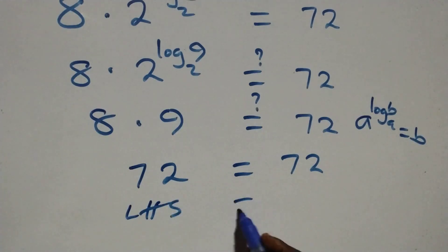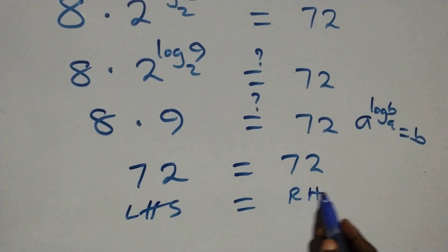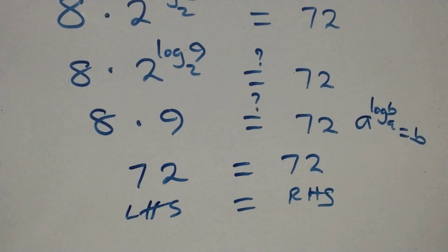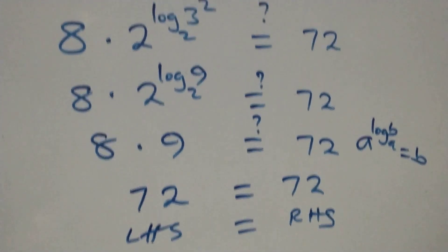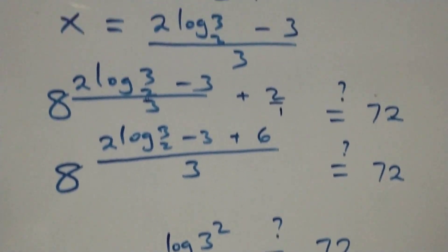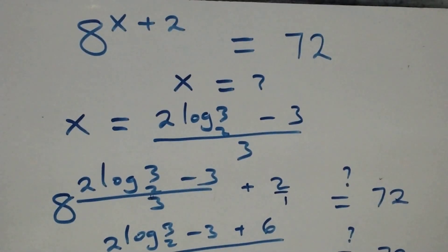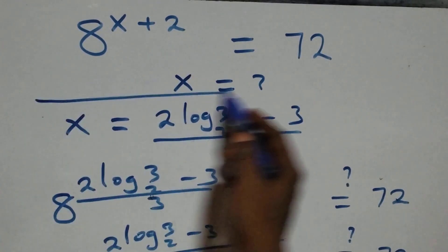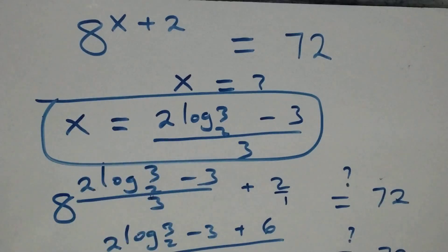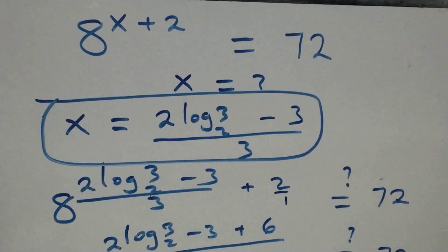We conclude that x equals (2 log₂3 − 3) / 3 satisfies this given problem. Thank you for watching — don't forget to subscribe for more videos, turn on the notification bell, share this video, give a thumbs up, and put your comment. See you in the next video — bye for now!